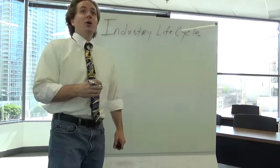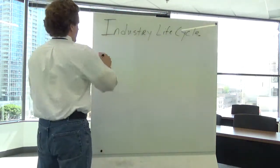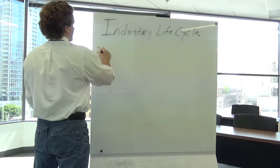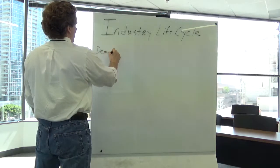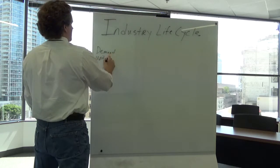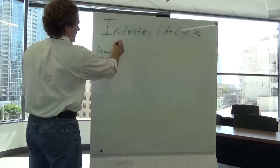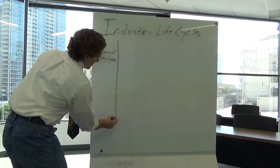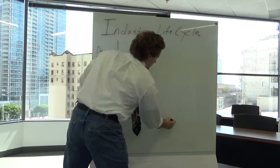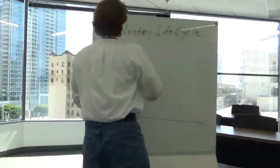So first thing that we look at for an industry life cycle is on your y axis you typically have demand. And that might be like the number of units per year sold or something like that, for example. And then as you come down to your x axis you have time.